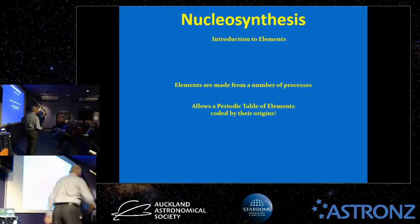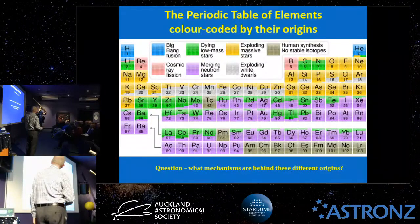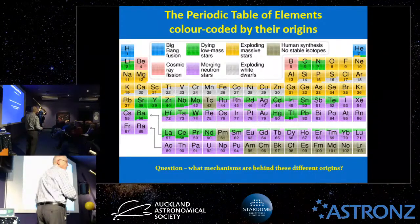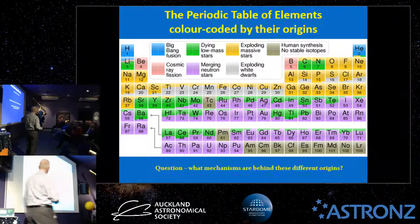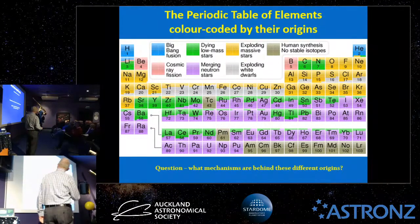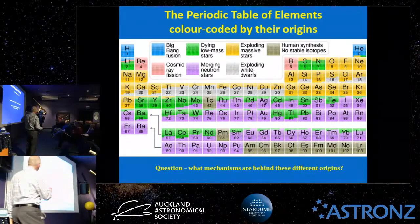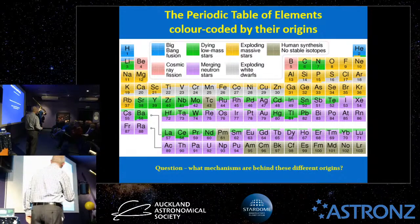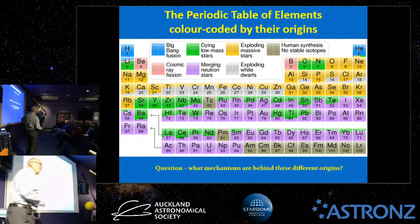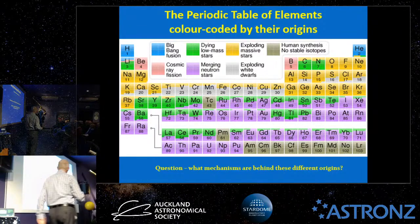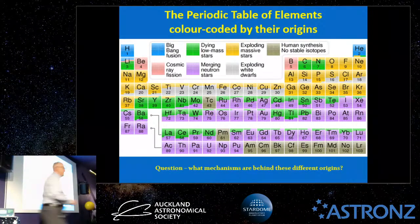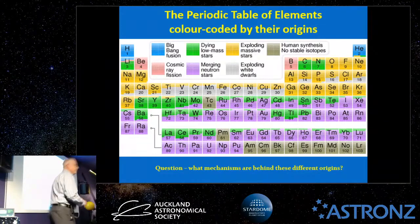This allows us to make a periodic table of elements color-coded by the origins of the elements — you can see that in your handout. Here's your standard periodic table with all the elements in their usual spots, but this time they've been color-coded by the process or mechanism that created them. For example, dying low mass stars are shown in green. That raises the question: what different mechanisms are involved in each process?